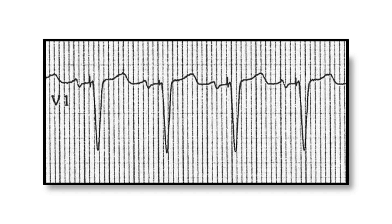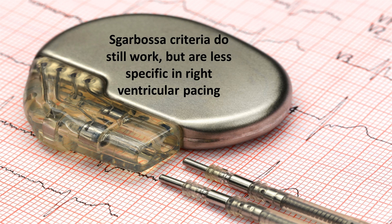It's worth remembering that the Sgarbossa criteria can also be applied in right ventricular pacing. When a patient has right ventricular pacing, they have a left bundle branch block morphology on the ECG, and we can apply the Sgarbossa criteria in this setting to diagnose an acute myocardial infarction. However, although the Sgarbossa criteria do still work in right ventricular pacing, they are less specific in this context and not quite so effective for making a diagnosis of acute myocardial infarction.